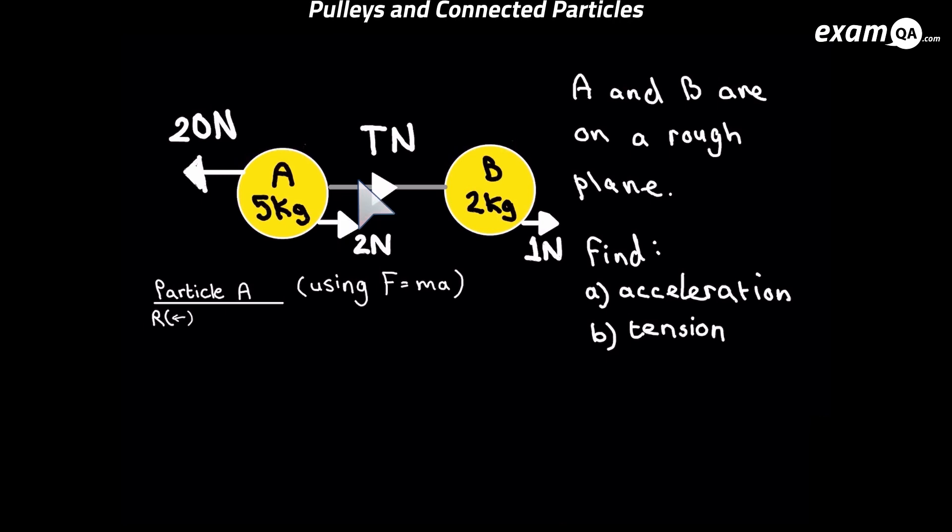Because if you think about particle A, it wants to move to the left, and the rope is not helping it, it's holding it back. So it's creating a tension force acting to the right.